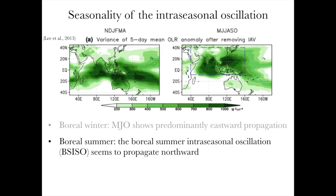The boreal winter case is comparatively simpler — though MJO is still barely understood. During boreal summer, there's something propagating northward besides the eastward propagation. This has been intensively studied recently, and people call it BSISO or CISO to summarize this northward propagating phenomenon.